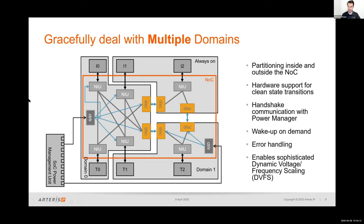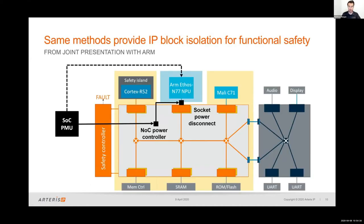These same domain handling techniques play a significant role in the context of functional safety. A functional safe SOC tends to have a safe NOC employing resilient mechanisms such as unit duplication. In certain modes of operation, it may become necessary to isolate an IP from the safe NOC to cut off communication. In that case, power domain mechanisms can be utilized — the PMU signals the NOC's power controller, and a socket power disconnect unit ensures no transactions can enter the safe NOC, fencing off the NPU.